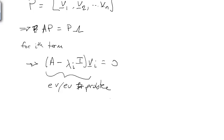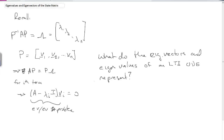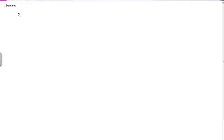The question is: what do these eigenvalues and eigenvectors represent for an ODE system? We can look into this question by examining an example. Let's say we had a simple system where x-dot equals 2x.